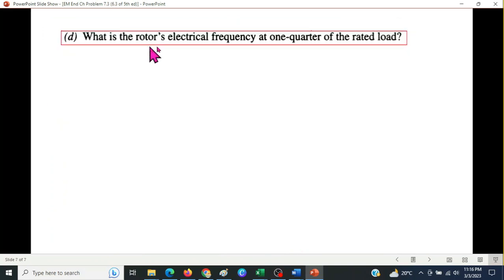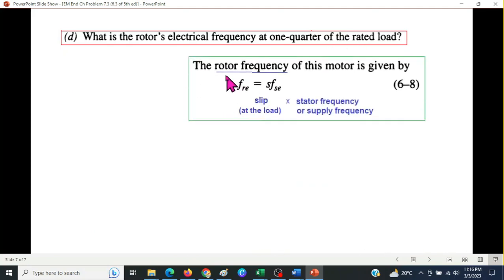The last part is what is the rotor's electrical frequency at one quarter of the rated load. Now the formula for electrical frequency is given by this: electrical frequency of the rotor or the rotor frequency is the slip times the stator frequency or the supply frequency.